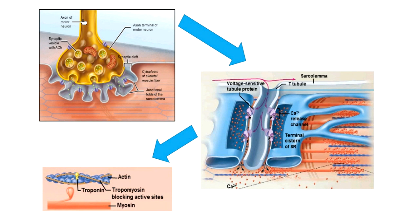The process of muscle contraction relies on starting with a signal that comes from the nervous system. When we talk about the nervous system in lesson number ten, it relates closely to what's going on in the muscular system. We have neurons called pre-synaptic neurons — the neurons that send messages. They can send a message to another neuron, or they can send a message down to a muscle cell. In muscle contraction, a pre-synaptic neuron brings a message down to my muscle cells: it's time to contract.